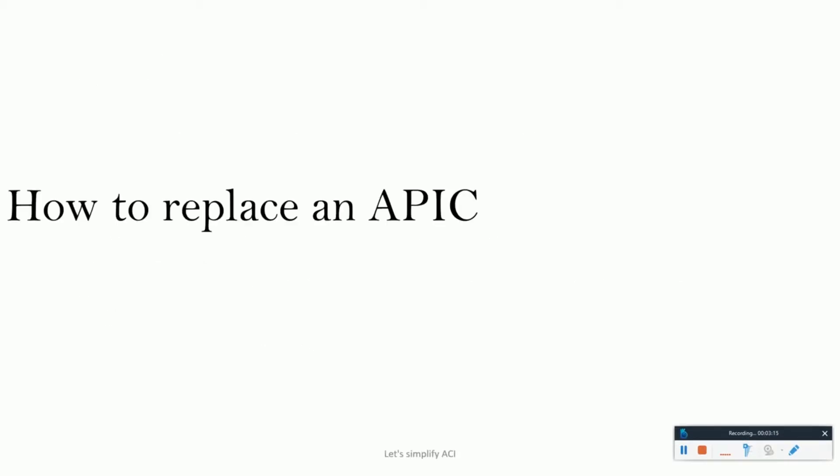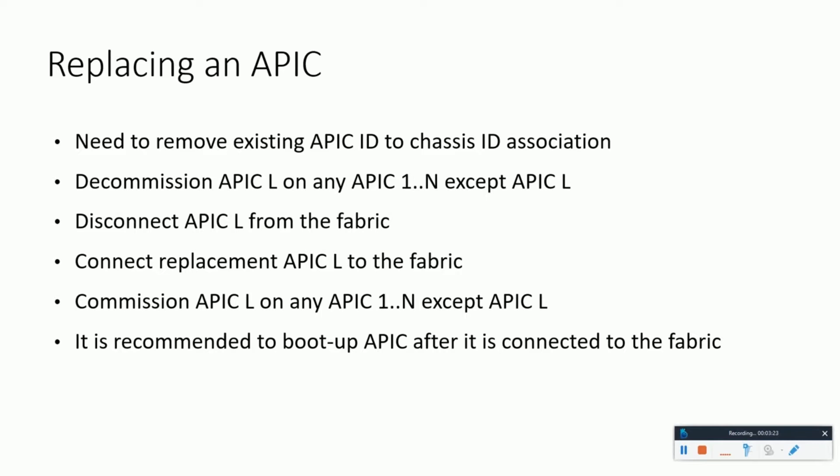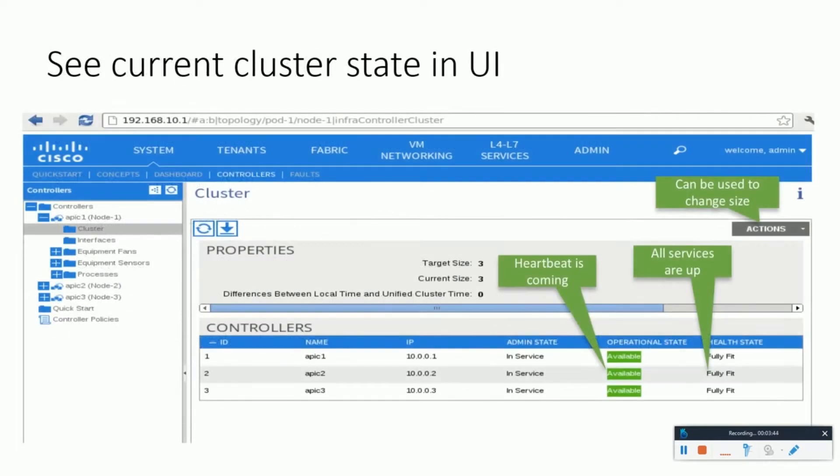When an APIC fails and needs a replacement, it's very simple. You just have to decommission the faulty APIC from the cluster via the GUI, power it down physically, and replace it with a new unit. You just need to provide the initial fabric initialization configuration details — the same as that of the cluster — and it will be able to communicate with the cluster. You then commission the device and confirm its state from the controller cluster state in the GUI.